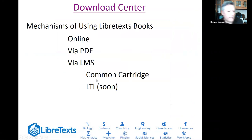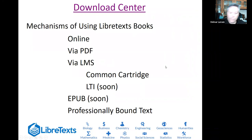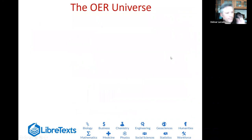The LMS interface is via common cartridge and LTI — Learning Technology Interoperability protocols — for a deeper interface to learning management systems. EPUB capabilities are coming soon. A professionally bound soft-cover 550-page book is $12 in black and white, or about $30 for a hard-bound color version — still one tenth the price of a commercial textbook — and none of that money comes to us; it goes directly to the publisher.